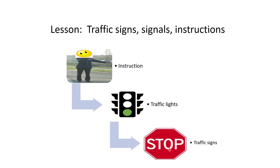In the absence of both instructions and traffic lights, you then follow the traffic signs. If it's a stop sign, you stop. If it's a priority sign, you continue without needing to give way to traffic coming from the left and right.